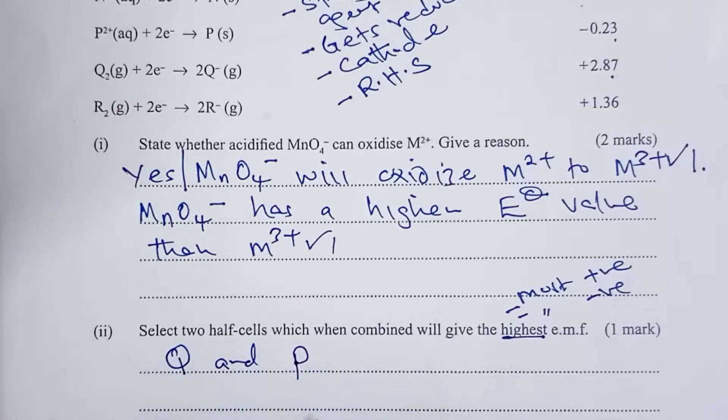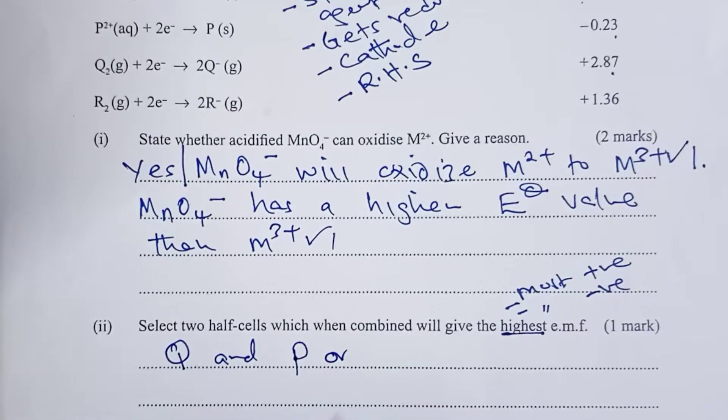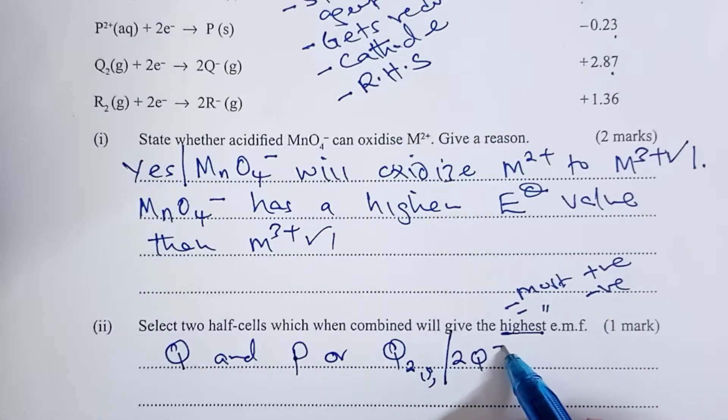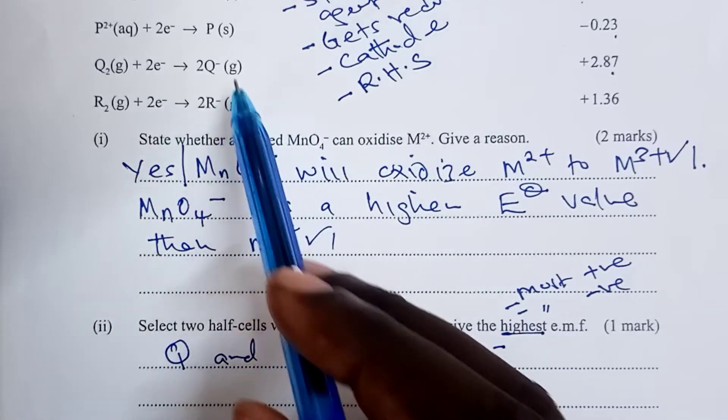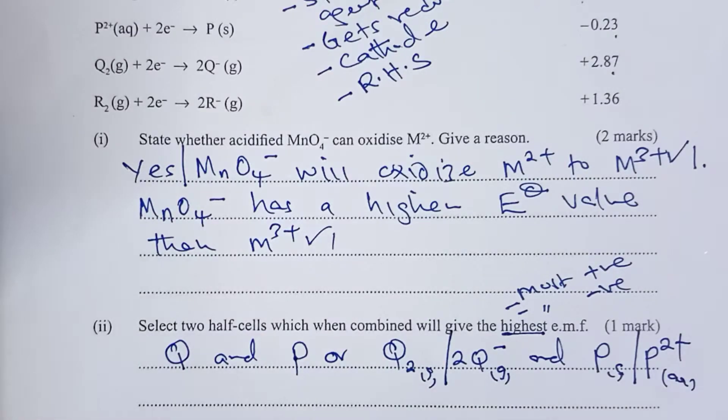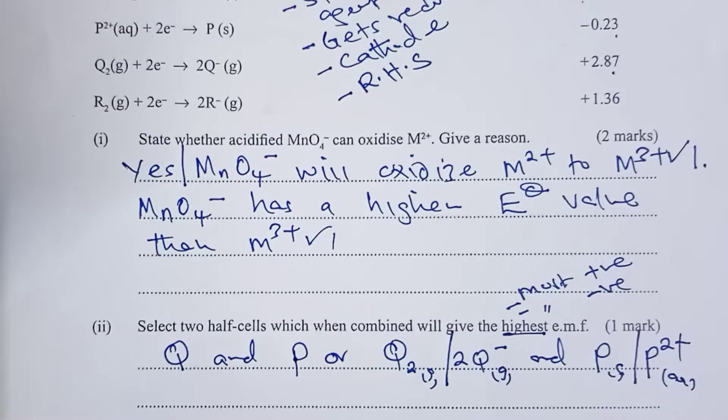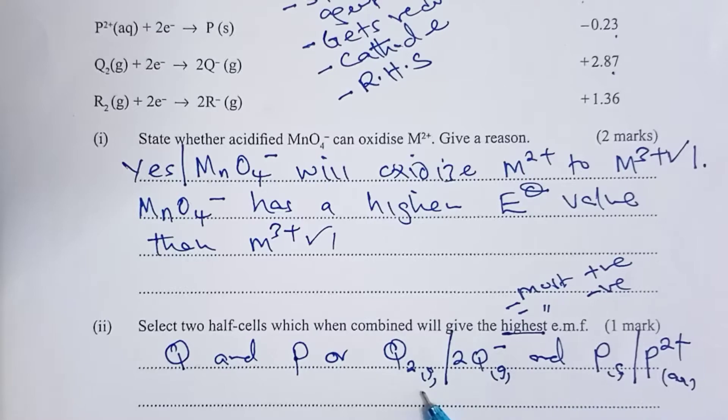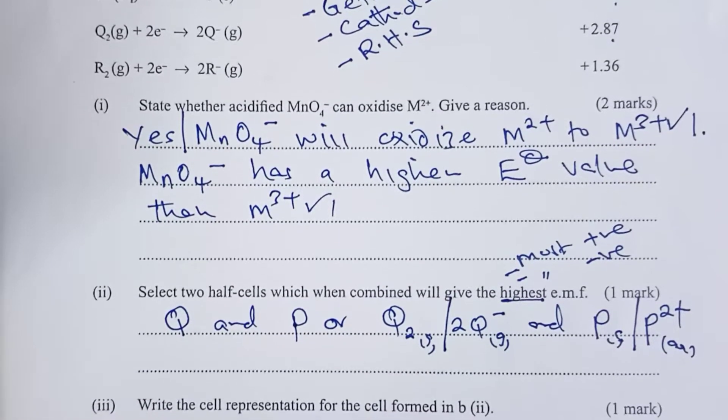A student can also have the option of giving us the representations for the half cells. We have Q2 gas, forward stroke, 2 Q ions which is still gas, and for P, we have P solid, forward stroke, P2+. Remember that half cells are represented as element, stroke, element ions. You could say Q and P, or give the representations of the two half cells.